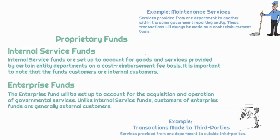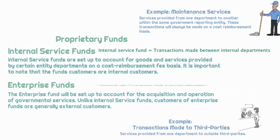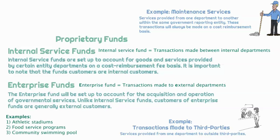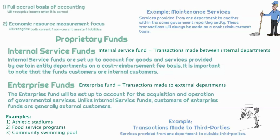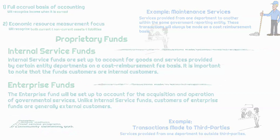The enterprise fund, on the other hand, is going to be transactions made between customers and the enterprise — associate this with external customers. So: E for enterprise consists of external customers, I for internal service fund consists of internal customers in-between departments. The enterprise fund is going to be used to set up accounts for the acquisition and operation of governmental services — examples include food service programs, athletic stadiums, and the community swimming pool. Internal service funds and enterprise funds are your proprietary funds, reported based on the full accrual basis of accounting and the economic resource measurement focus, recognizing all revenues when earned and expenses when incurred, including all long-term fixed assets and long-term liabilities in the statement of net position.